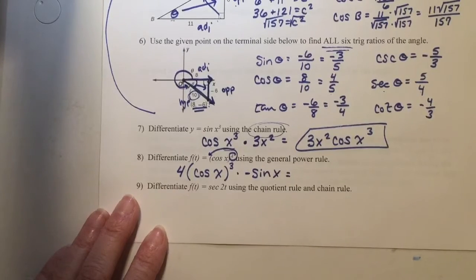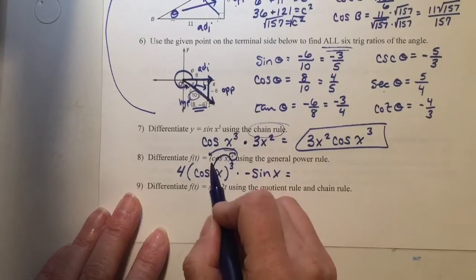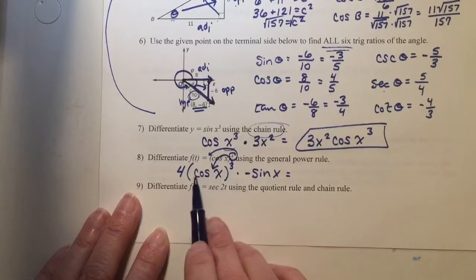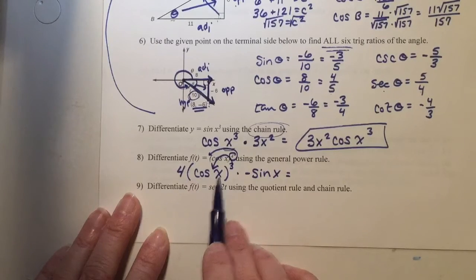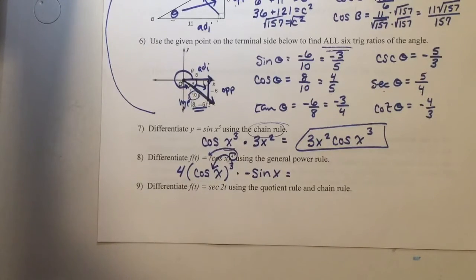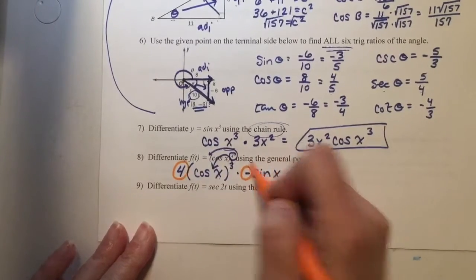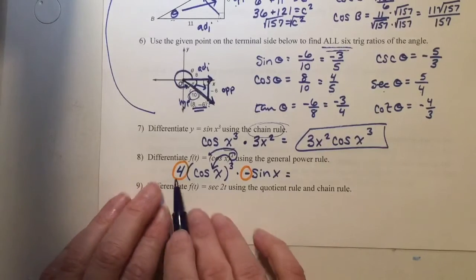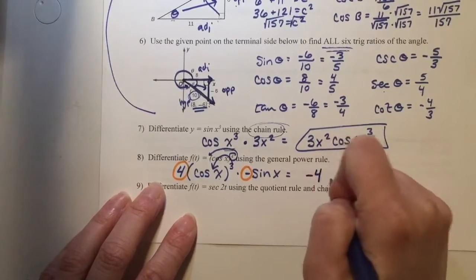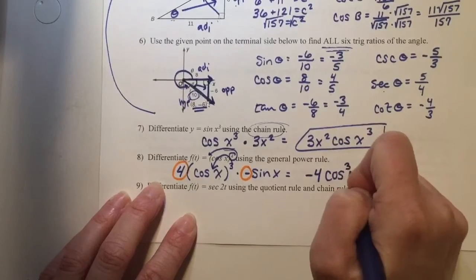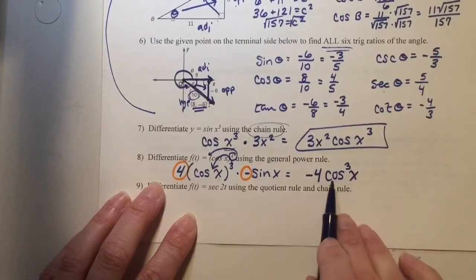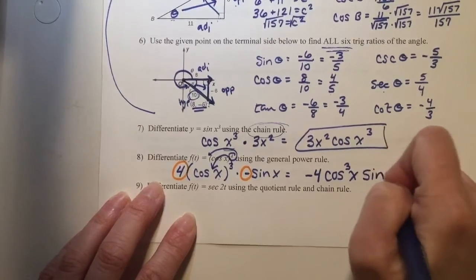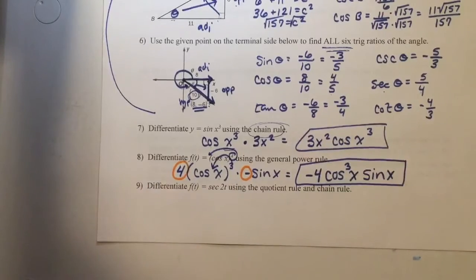Now I can write this a few different ways. Probably the most proper way is to remember that if you have an exponent on a trig function, that value shows between the trig function and the variable. The 4 and the negative are out front of the trig functions, so you can multiply them together: positive 4 times negative 1 is negative 4. Because it's cosine of x to the power of 3, you show that 3 right here — times the sine of x. This would be the best way to write the solution: negative 4 cosine cubed of x times sine of x.